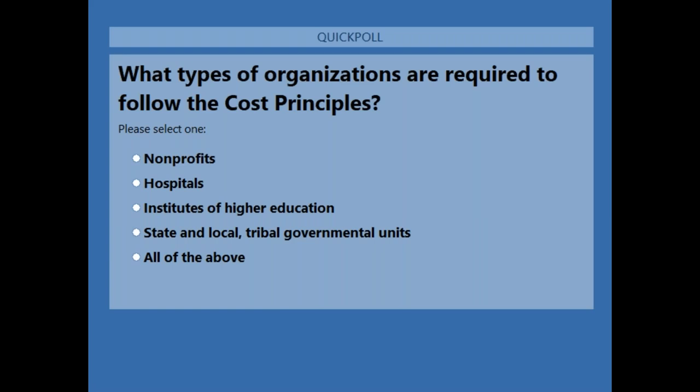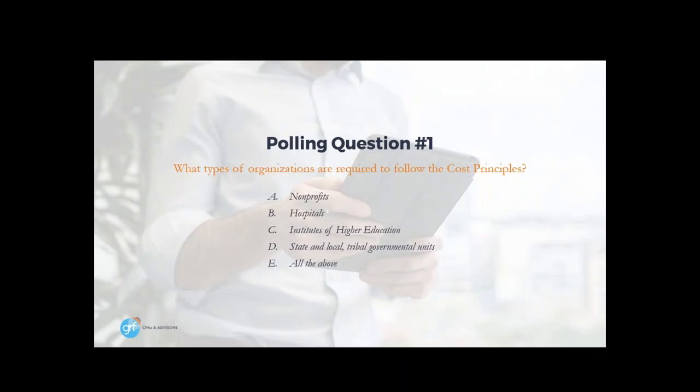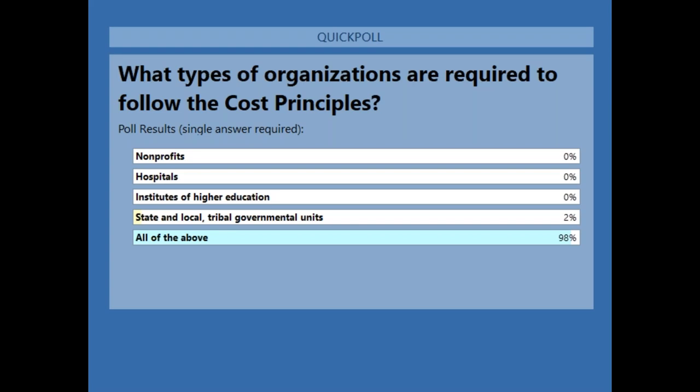While everybody's submitting answers, we have our first CPE word. Our first CPE word is rate — R-A-T-E. Remember, if you want to receive CPE credit, please jot the words down because you will need them for the survey following our webinar. Excellent — everybody knew that nonprofits, hospitals, institutes of higher education, state and local tribal units and governments — all of them are required to follow the cost principles under the uniform guidance.